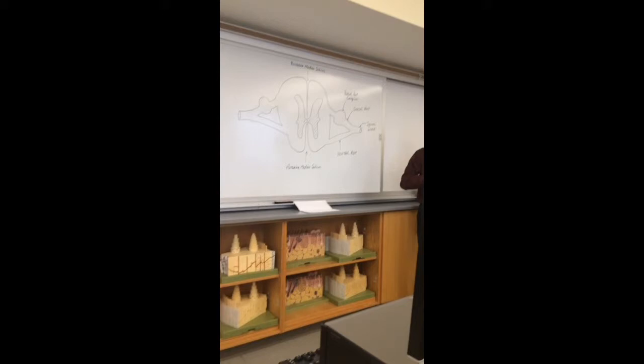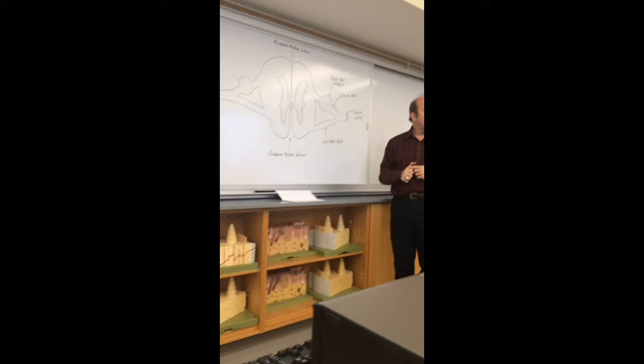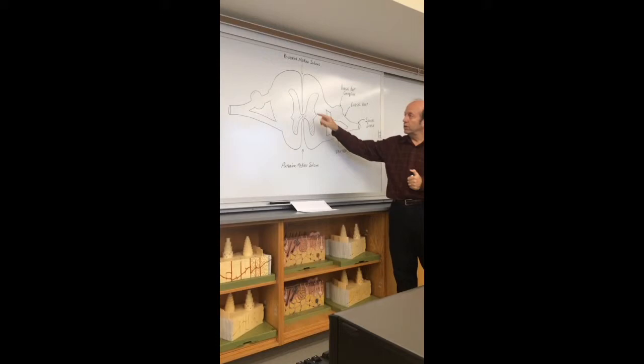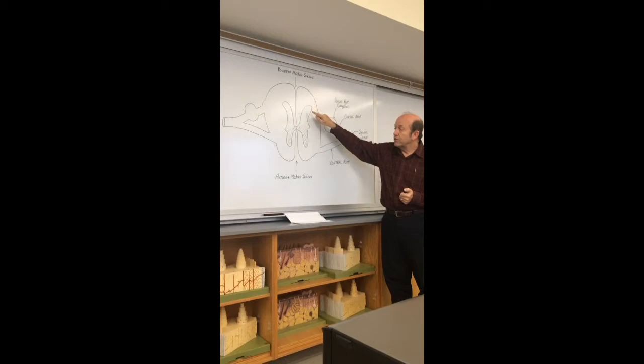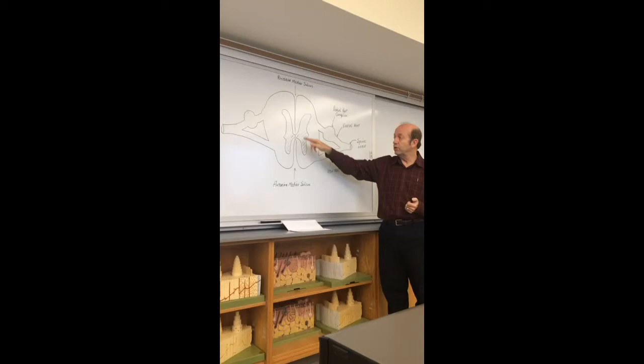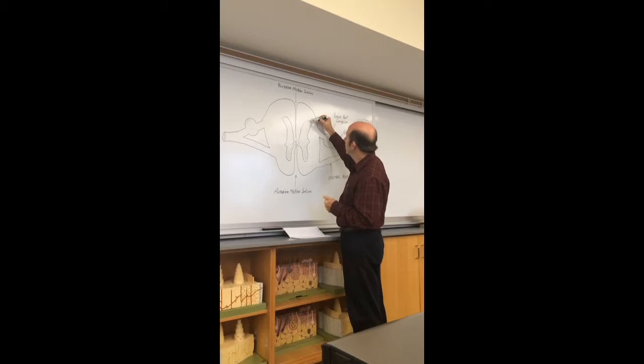There are three things called horns that are part of this spinal cord, part of the gray matter. Now, there are these branches, like here's one, here's one, and here's one. There's three branches. It's like a butterfly, right? Parts of the wing. Here's the posterior gray horn.